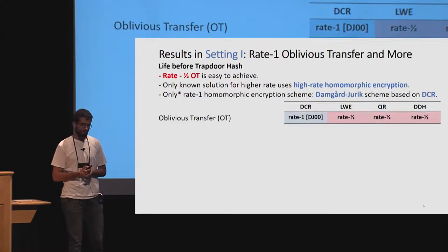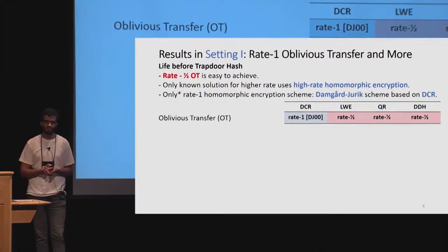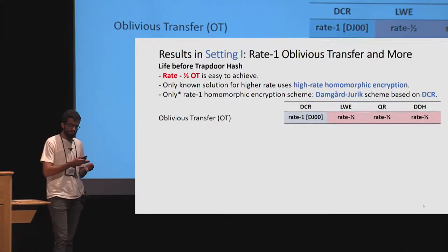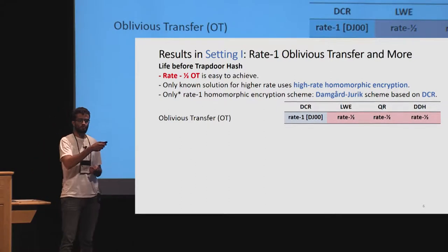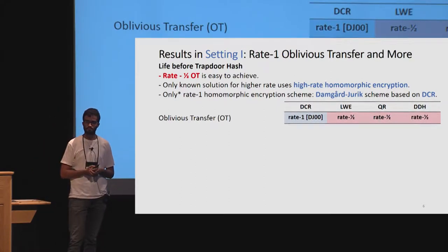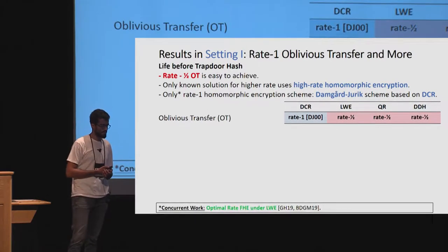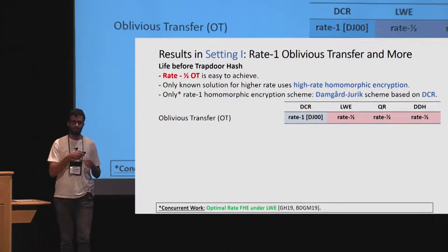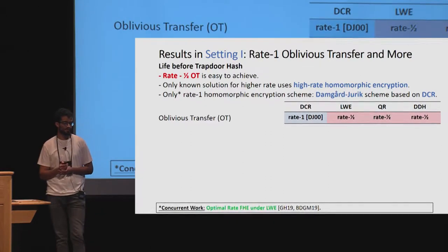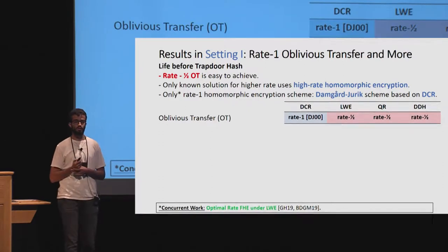Before trapdoor hash, we could get rate-1/2 oblivious transfer using generic assumptions, where the sender had to send at least 2n bits. The only way to get a higher rate was to use homomorphic encryption schemes — specifically the Damgård-Jurik scheme based on the DCR assumption. From all standard assumptions other than DCR, the best achievable was rate-1/2 OT. The only exceptions are two very recent papers by Gentry–Halevi and Brakerski et al., showing optimal-rate fully homomorphic encryption under LWE.